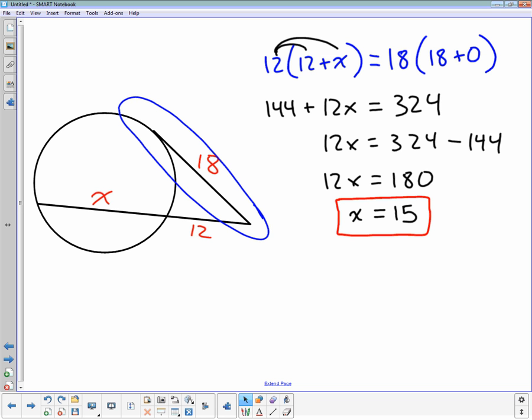How do we feel? The first one is very straightforward, the second one requires a few more thinking steps. You have to remember how these segments all interact. So outside times the whole length equals outside times the whole length. Alright, so you guys are going to go to the boards. You have two sets to work on.